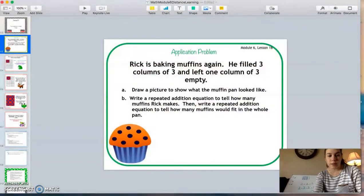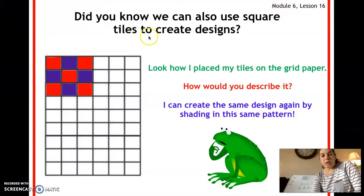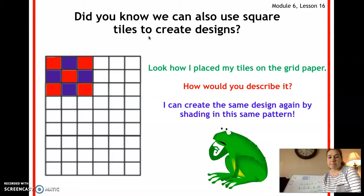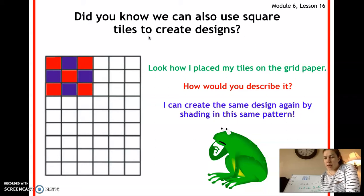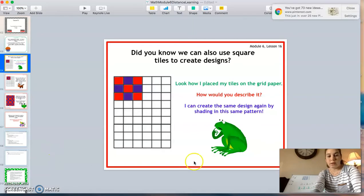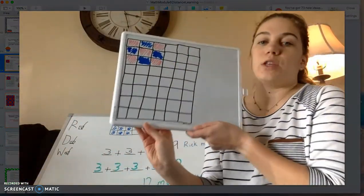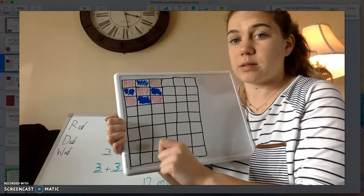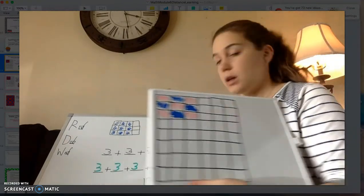Now let's move to our next part — this gets a little tricky. Did you know we can also use square tiles to create designs? Look at how I placed my tiles on the grid paper to my left. How would you describe how I placed those tiles? What pattern do you see? I see red, blue, red, blue, red, blue, red, blue, red. I can create the same design again by shading in this same pattern. On this separate sheet — something you can do at home too — you can create a grid using a ruler or something straight, then fill it in with pencil, marker, or whatever you have.